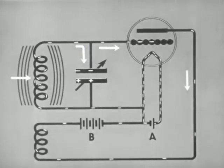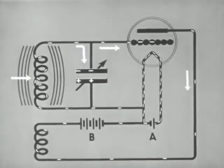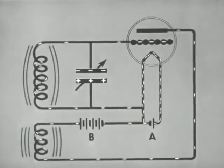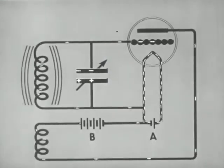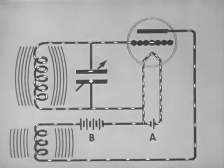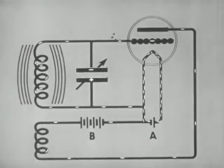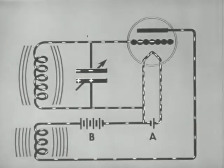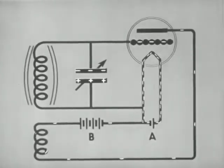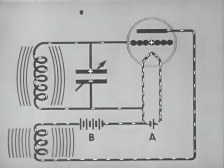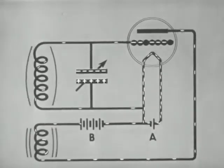This completes the entire cycle. The frequency at which the current alternates is determined by the resonant frequency of the grid circuit, which may be controlled by a variable condenser. The current may alternate millions of times per second. Direct current from the B battery is thus changed to a high frequency alternating current in the grid circuit.